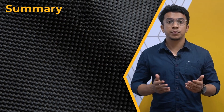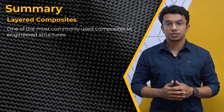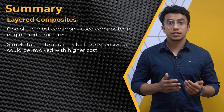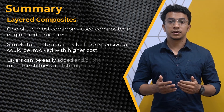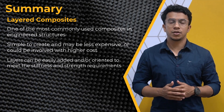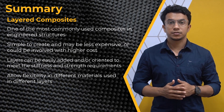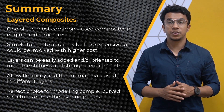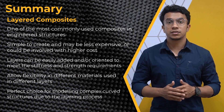Let's summarize the key takeaway points from this lesson. Layered composites are one of the most commonly used composites in engineered structures. Depending on the application, they can either be simple and less expensive, or much more involved with higher costs. Layers of composite materials can be easily added and oriented to meet stiffness and strength requirements. Layered composites also allow flexibility in using different materials in different layers. Lastly, layered composites are a perfect choice for modeling complex curved structures due to the advantages the layering process offers over other materials like metals.